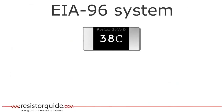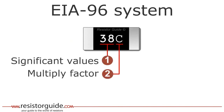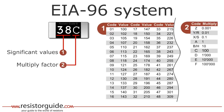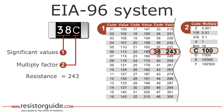Now we take a look at another popular coding method: the EIA-96 system. This system is based on the E96 series of preferred values, so these resistors should have an accuracy of 1%. The first two digits represent a code used with a table to find the resistance value with three digits. The third character also represents a code to retrieve the multiply factor. By looking up 38 in table 1 we find a value of 243. In table 2 we find that the letter C means a multiply factor of 100.